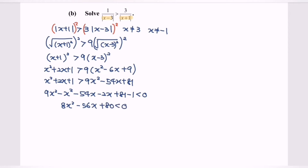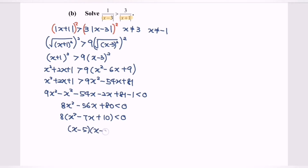So kindly factor out the 8. We have x squared minus 7x plus 10 less than 0. So kindly factorize x squared minus 7x plus 10, and we will have (x minus 5) multiplied with (x minus 2) less than 0.